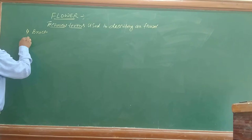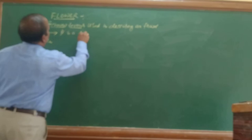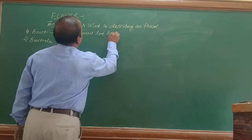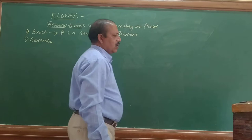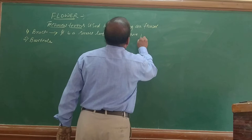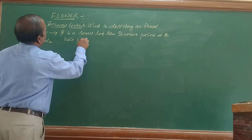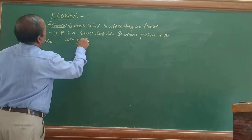Let us list out the different technical terms. First one: bract. Second one: bracteole. A bracteole is a small leaf-like structure present at the base of the flower stalk on the pedicel.